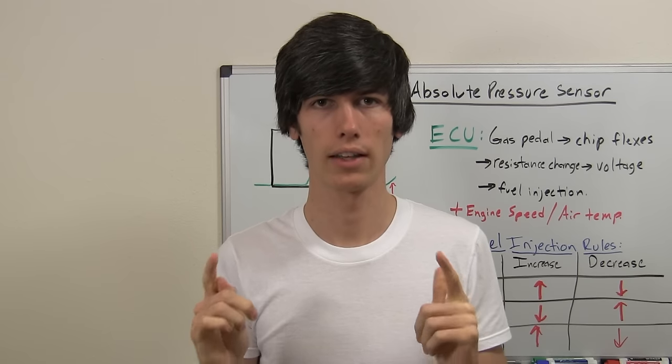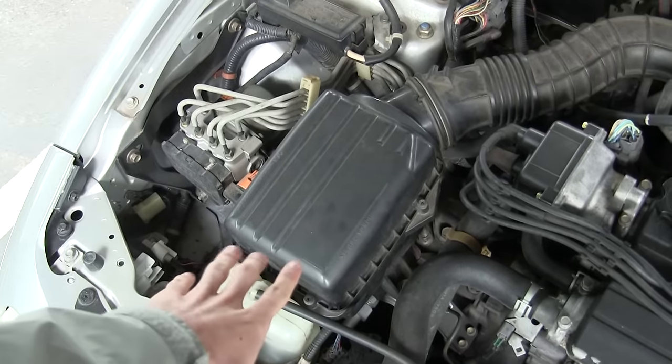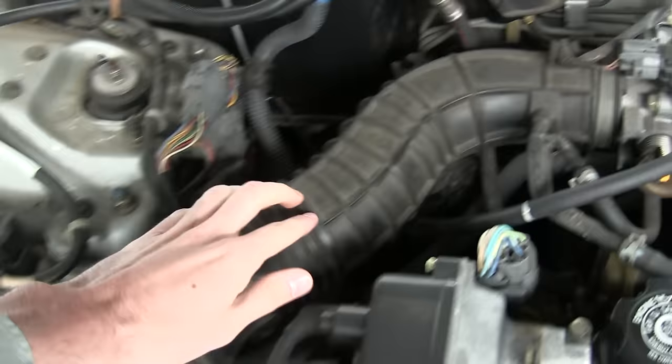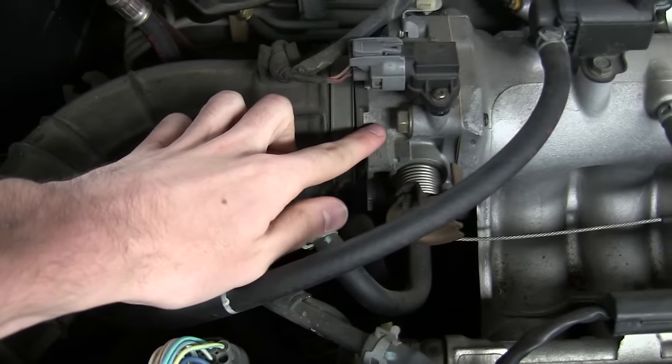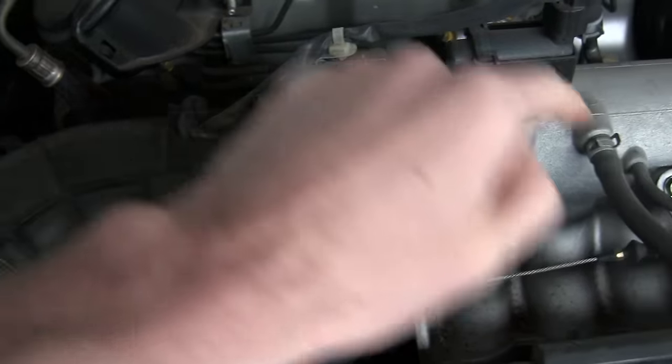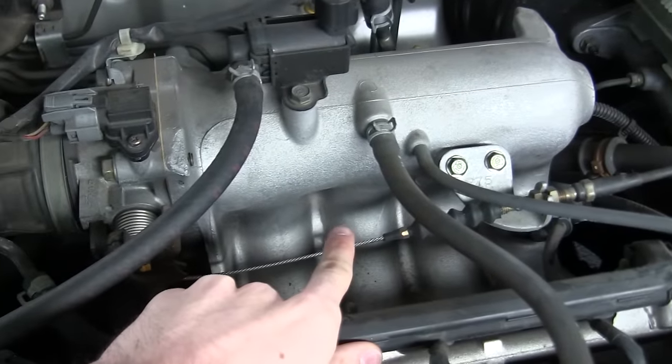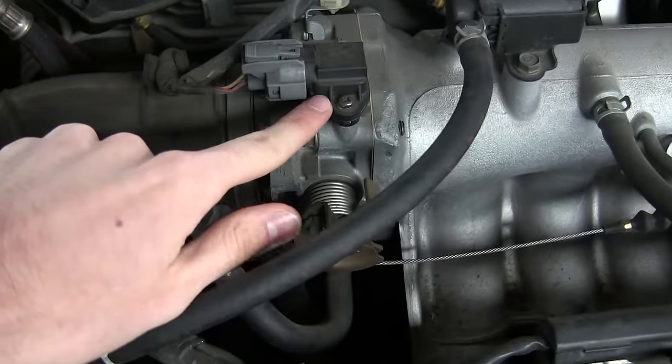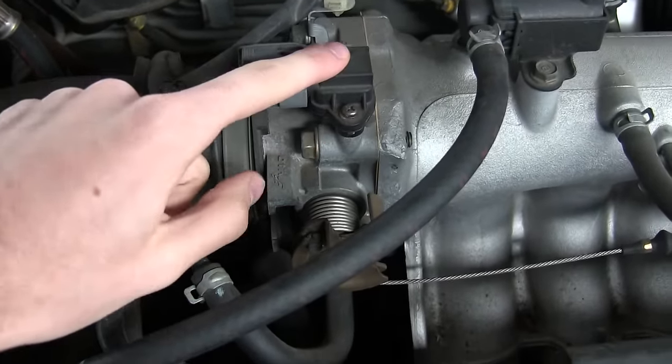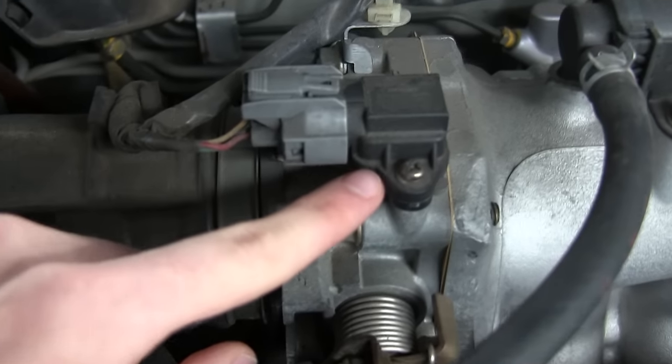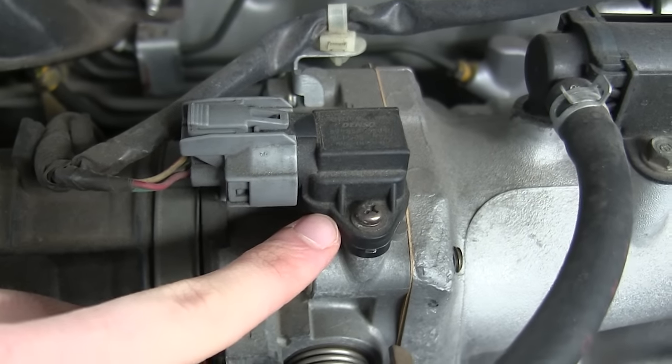So let's take a look at this on my car first before I explain how it works. So here we have the air intake for my engine and if we follow that we get to the throttle body. Now connected to the throttle body we've got the intake manifold and mounted directly on top of the throttle body we have the manifold absolute pressure sensor which is what I'm going over in this video.